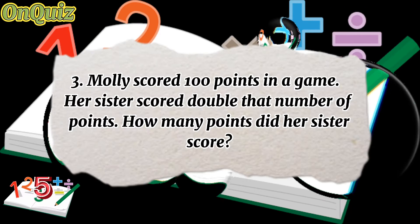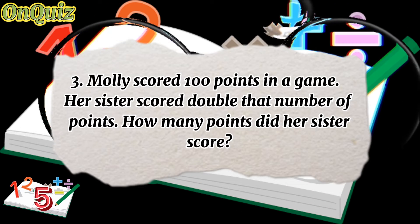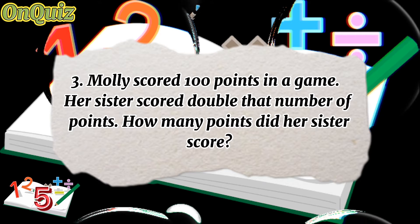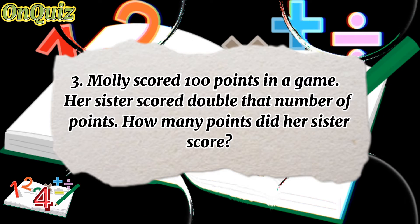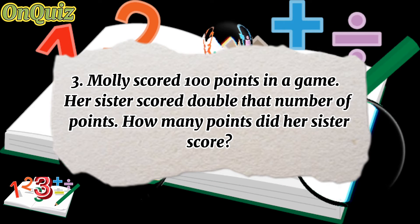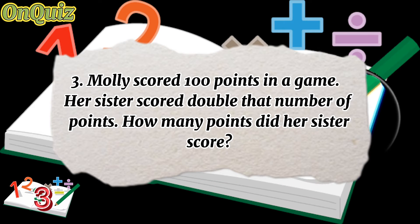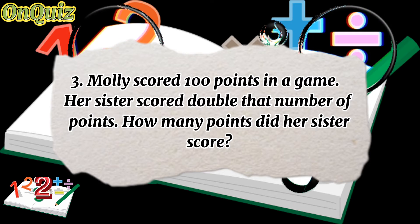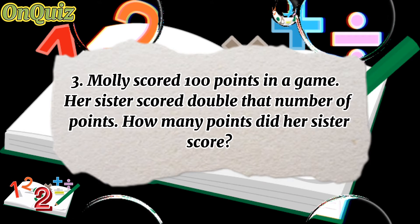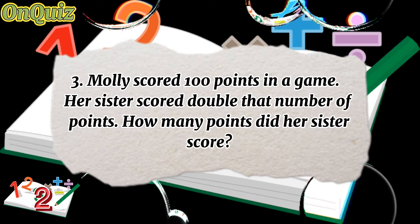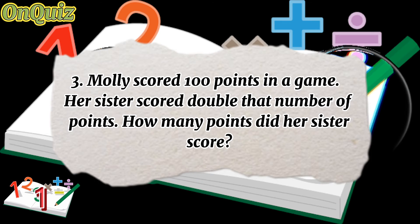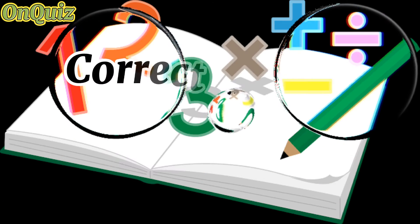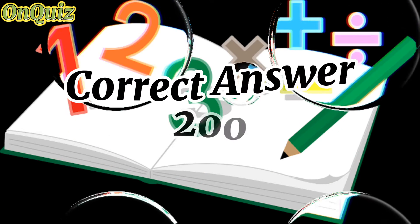Question 3. Molly scored 100 points in a game. Her sister scored double that number of points. How many points did her sister score? Correct answer: 200.